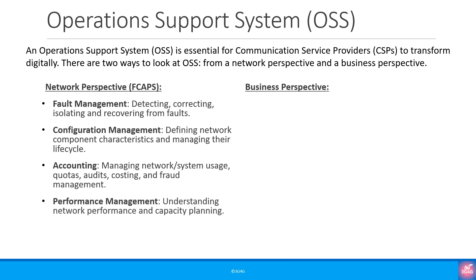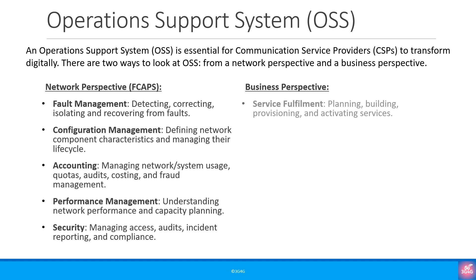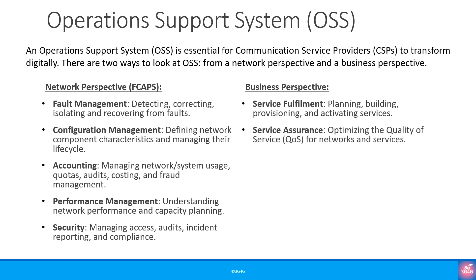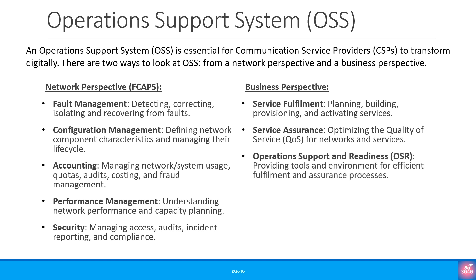P is performance management, which involves understanding the network performance and capacity planning. Finally, S stands for security, which includes managing access, audits, incident reporting and compliance. From a business perspective, OSS is responsible for service fulfilment — which involves planning, building, provisioning and activating services — service assurance, which is responsible for optimising the quality of service for networks and services, and finally operation support and readiness, or OSR, which involves providing the tools and environment for efficient fulfilment and assurance processes.